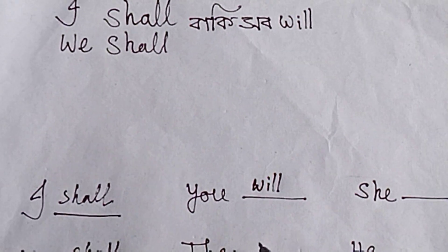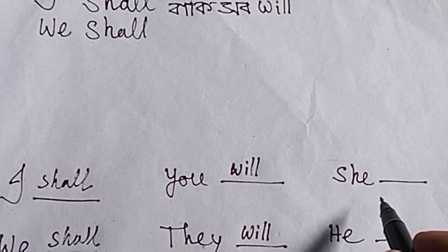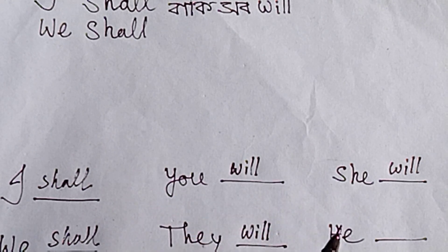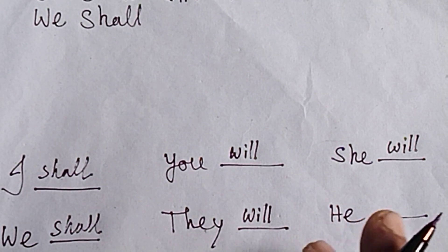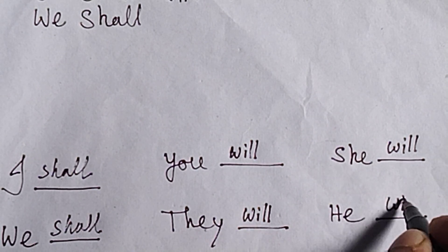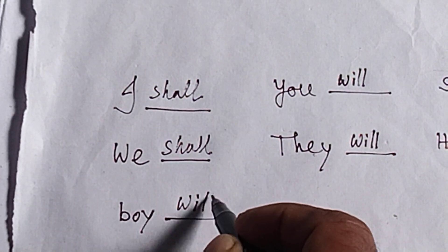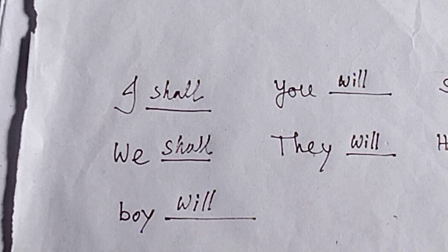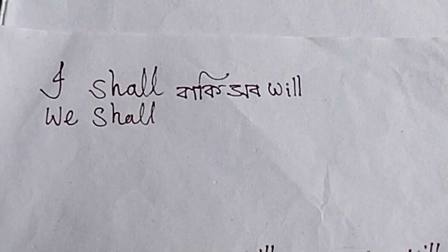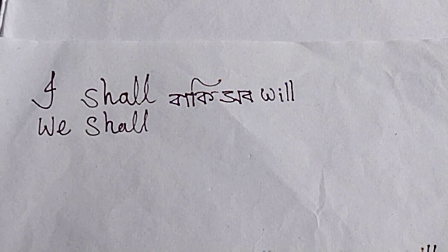Will — what do they say? Will. I or we — do they say will? He says he will. Boy says will. I shall, we shall — both will.